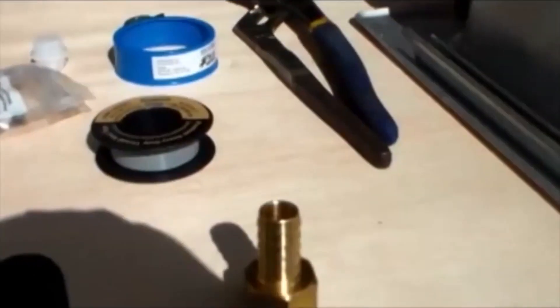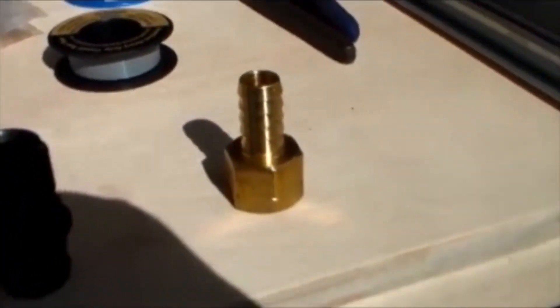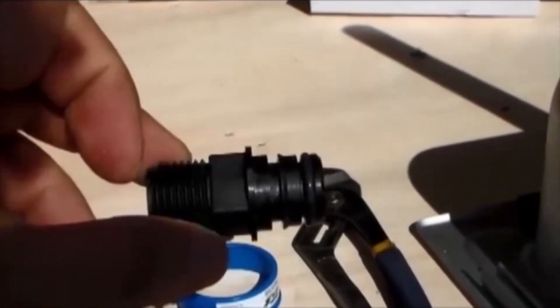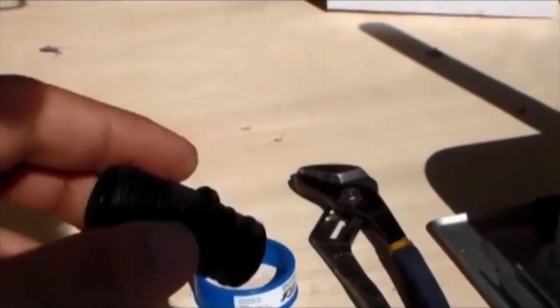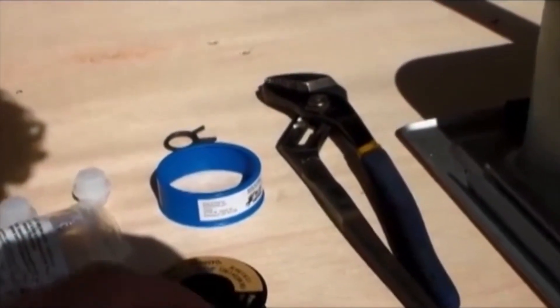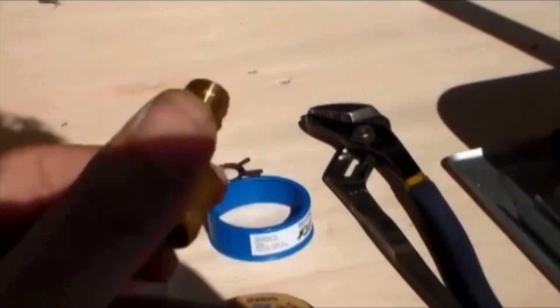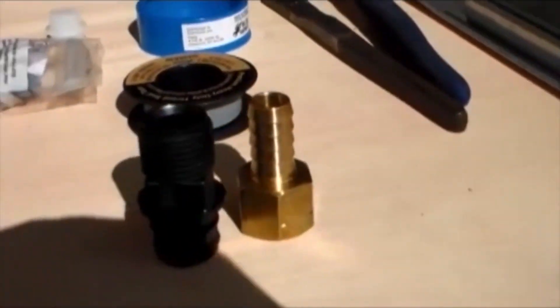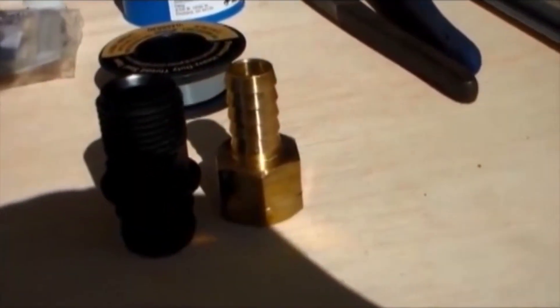These flow jet pumps come with quick disconnect fittings. So this pops in there real easy. And you can get them ready for hoses like that. So I'll go in and Teflon tape that and put those together.